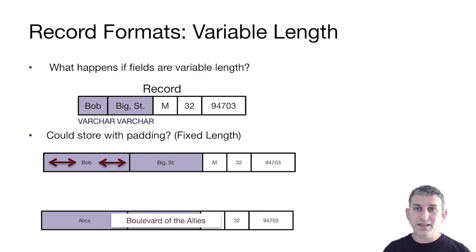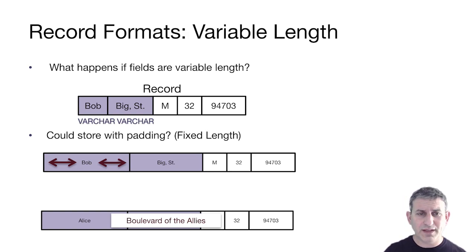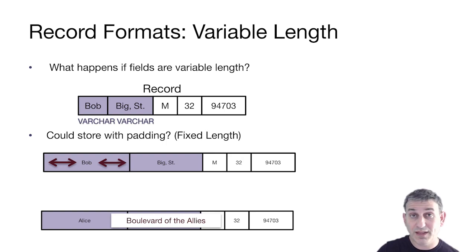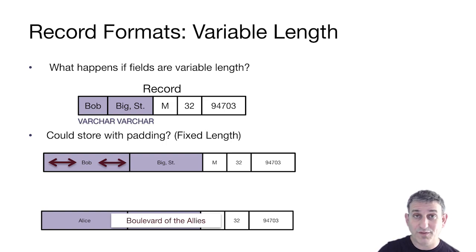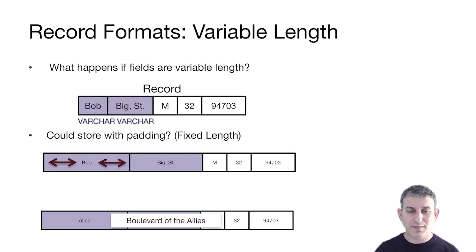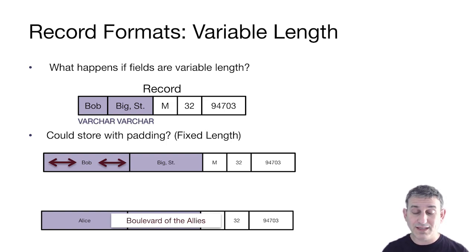There are a bunch of problems when things get to be variable-length. Suppose we have variable-length fields — for example, a record where the first field is 'bob', the second is 'big street', and so on, using SQL's varchar type for variable-length strings. One approach is to pad short strings out to a big fixed length, say 32 bytes, but that breaks down when a value is even longer than what you allocated — for example, 'Boulevard of the Allies' doesn't fit. So fixed-length storage with padding won't work.